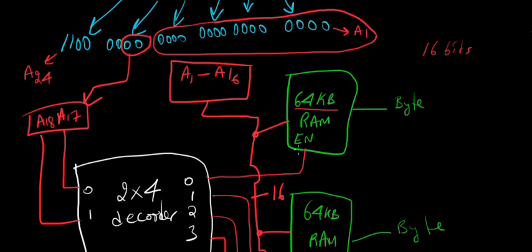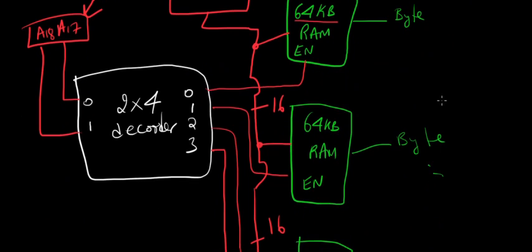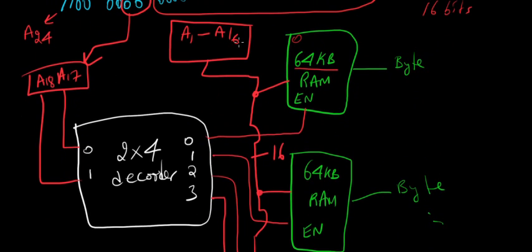A17 and A18 give input to the 2×4 decoder to access different outputs. For example, if 00 is selected, the first RAM block will be enabled. Depending on what A1 to A16 are set to, that specific address location will be accessed. If A1 to A16 are all zeros, the first byte of data is accessed. Similarly, if 01 is selected at the decoder, the second RAM is selected, and if A1 to A16 are all zeros, the first byte of that second RAM block is accessed.